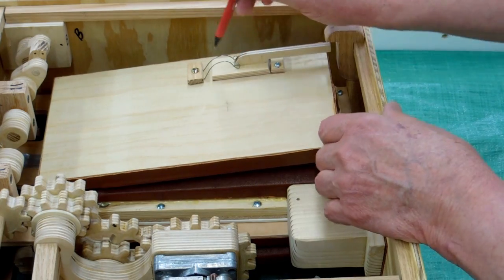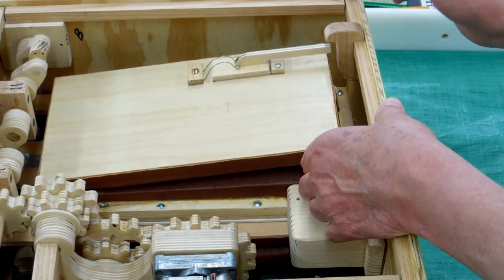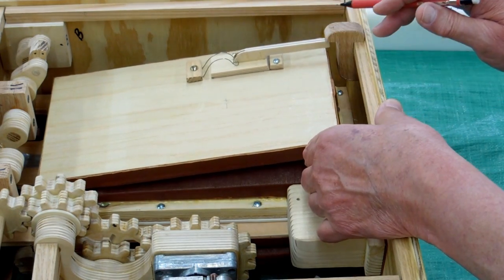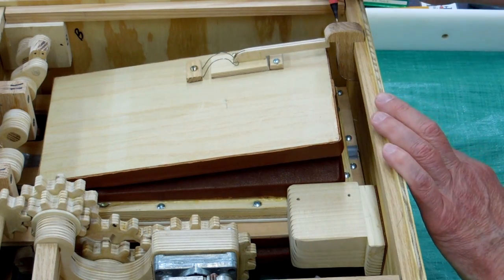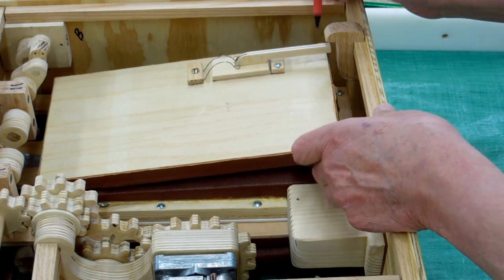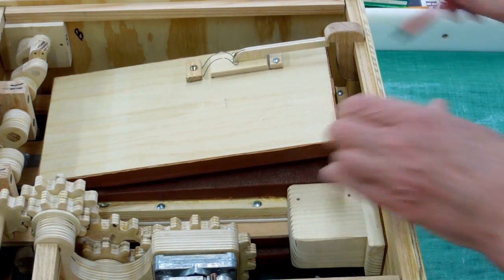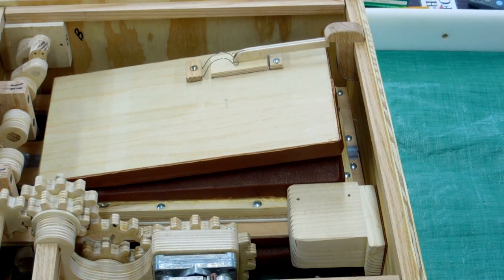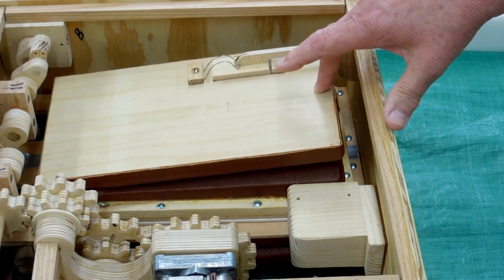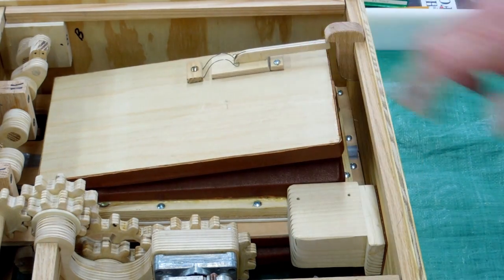The relief valve is spring-loaded. It's holding that shut. If the reservoir inflates too far, this trip block pushes down on this and it dumps the air, and it keeps that reservoir from over-inflating. But with this just sitting in place, it's holding air pressure pretty well.